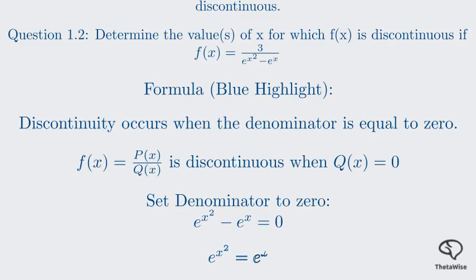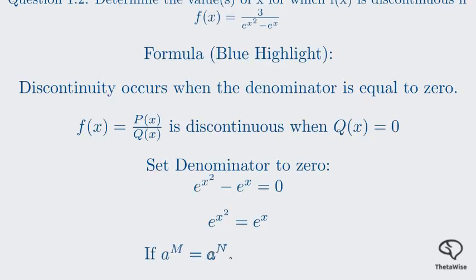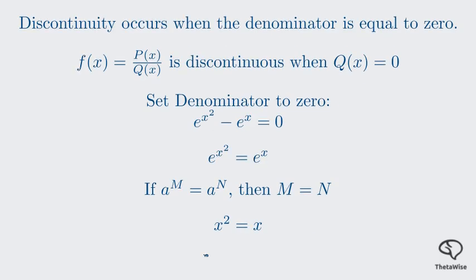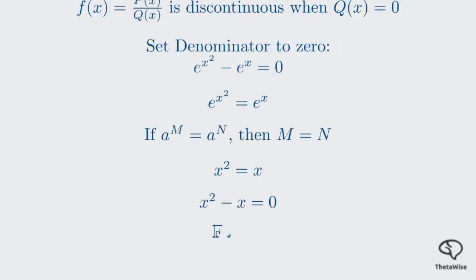This gives us the exponential equation e to the power of x squared equals e to the power of x. A key property of exponential functions is that if their bases are equal, their exponents must also be equal. Since both sides have a base of e, we can equate the exponents. This gives us a much simpler equation: x squared equals x. This is a quadratic equation. To solve this quadratic, the best method is to bring all terms to one side and factor. Subtracting x from both sides gives x squared minus x equals 0. We can see a common factor of x, so we factor it out.